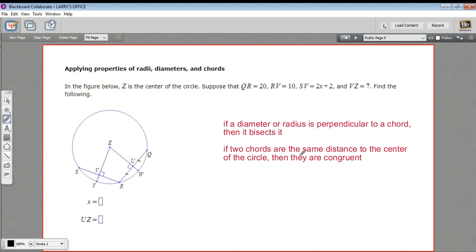The other fact is that if two chords are the same distance to the center of a circle, so if the distance of this chord to the center and this chord to the center are the same, then the chords are the same length, and vice versa. If the chords are the same length, then they're the same distance to the center. So those are the two facts we need to apply here.